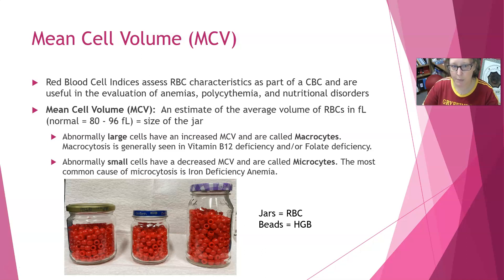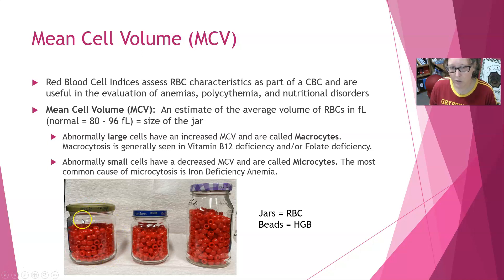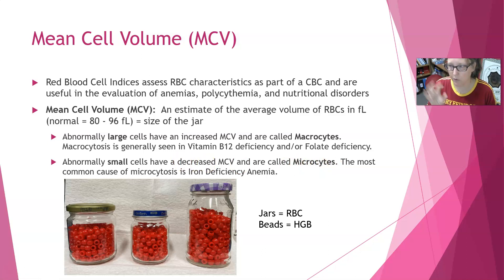The first index is the mean cell volume, or MCV, usually reported after the red count, hemoglobin, and hematocrit. The MCV is an estimate of the average volume of red cells in femtoliters. In our illustration, this corresponds to the size of the jar — the jar represents the red cell. A normal size jar is a normal size red cell, a smaller one represents a smaller cell, and a larger one represents a larger cell. The smaller ones are called microcytes and have a decreased MCV.